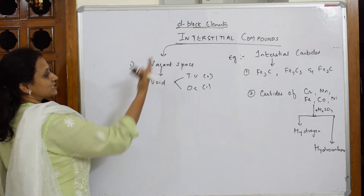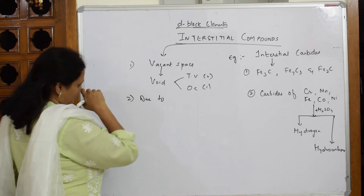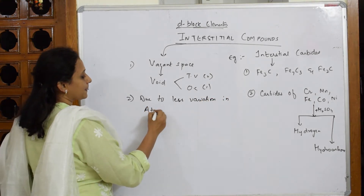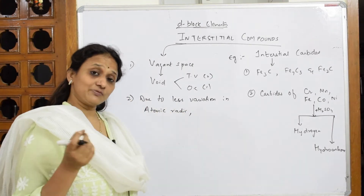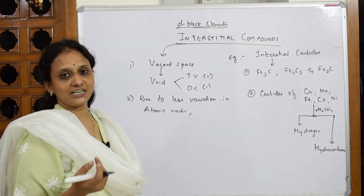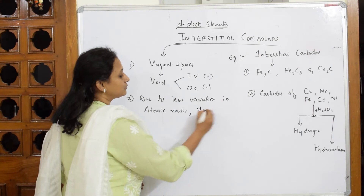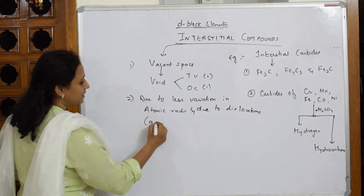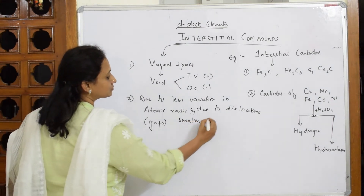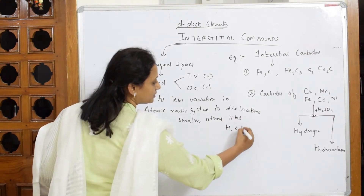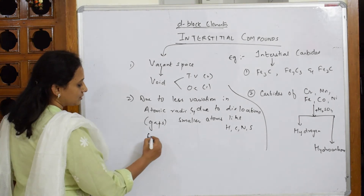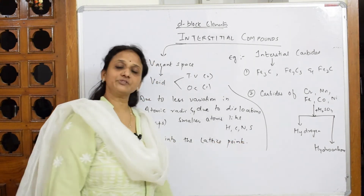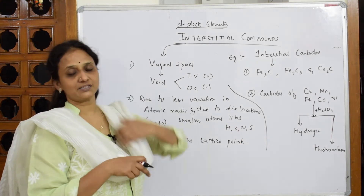Interstitial compounds form in the vacant spaces or voids. Due to less variation in atomic radii and due to dislocations — which are gaps — smaller atoms like hydrogen, carbon, nitrogen, and sulfur go and fix into the lattice points. When they fix in the lattice points, they form different types of compounds: carbides if with carbon, or nitrides if with nitrogen.